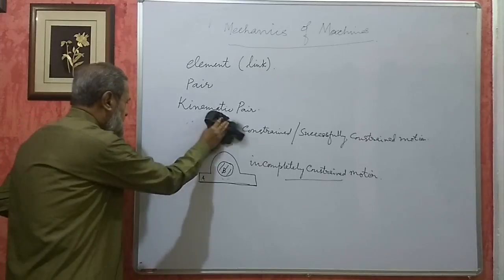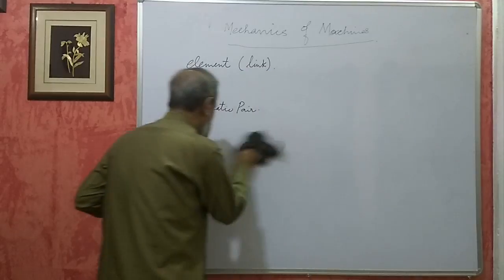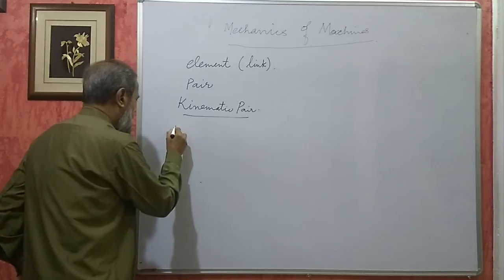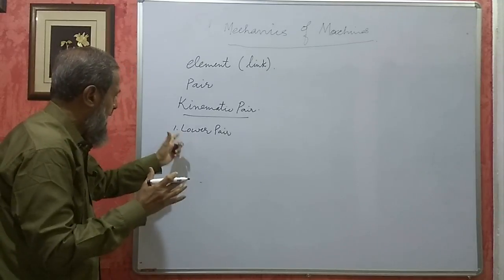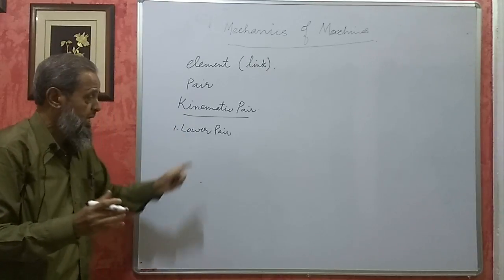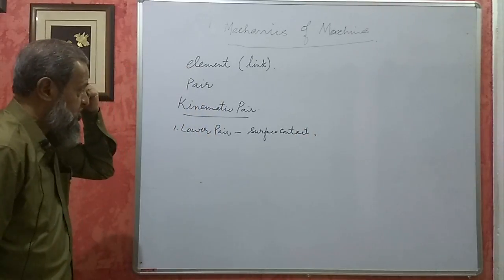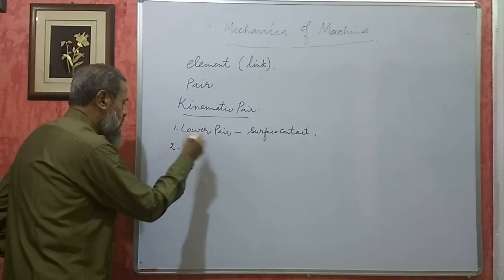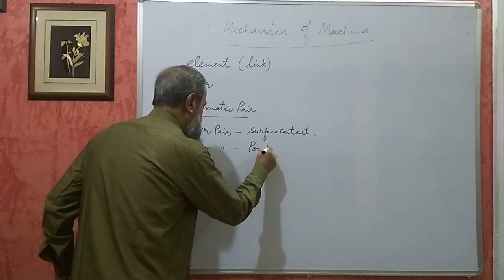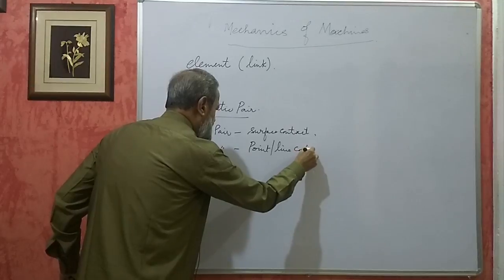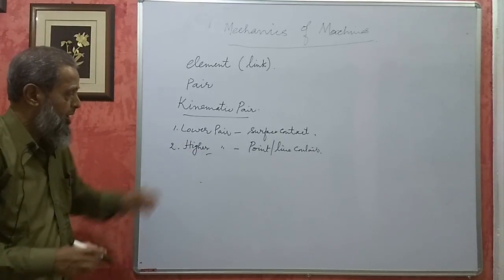Next comes the classification of kinematic pairs. There are many types. We have a lower pair — if the contact between two elements of a kinematic pair is a surface contact, the pair is called a lower pair. If the contact between the two elements is either point contact or line contact, then it is called a higher pair. For example, a flat belt and flat pulley, or the cam and follower, form a higher pair.